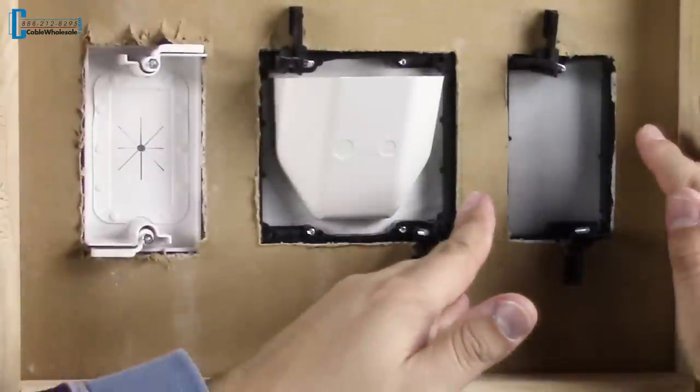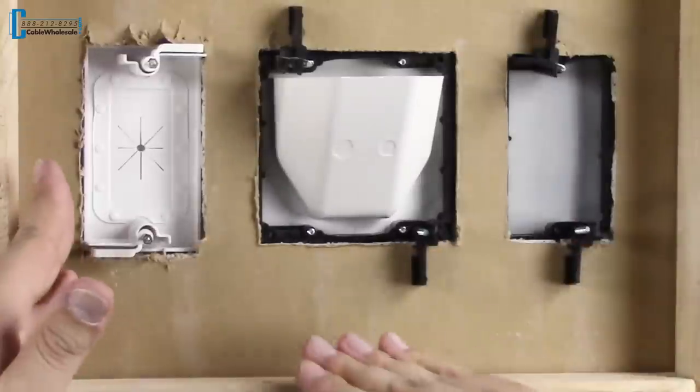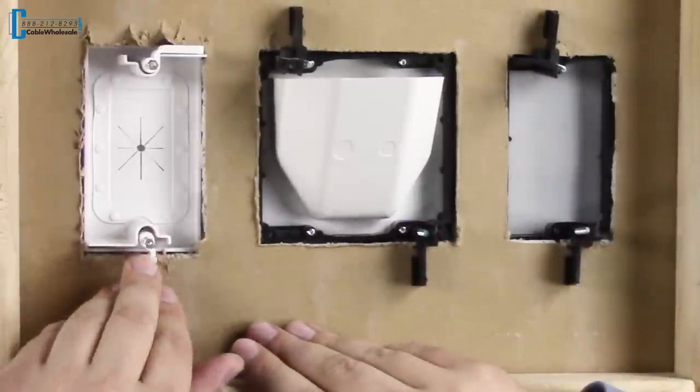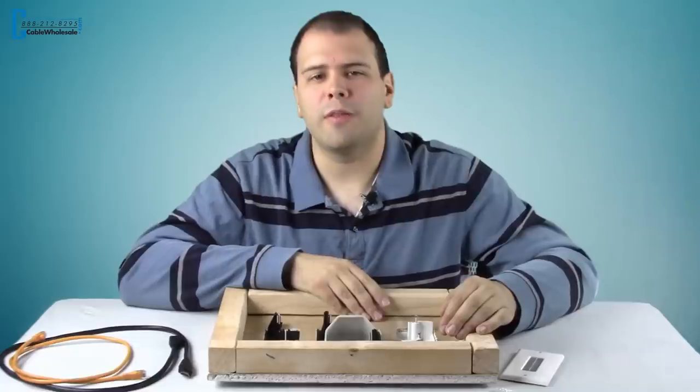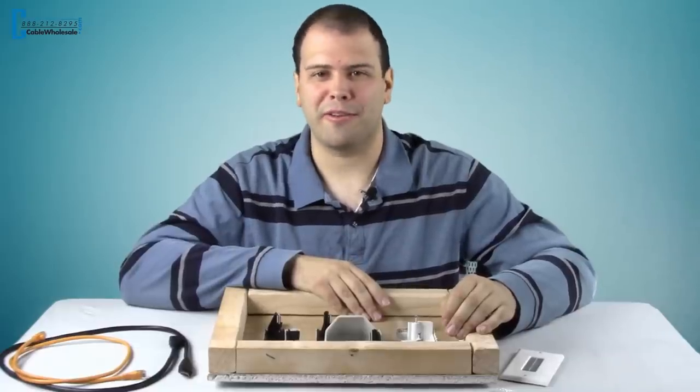When installing a pass-through, you can install these low voltage mounting brackets or the easy mount plates, which has the wings integrated into the plate itself. These save you the hassle of having to install a separate mounting bracket.